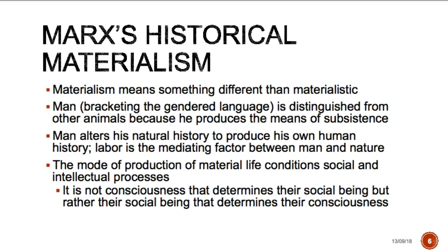Marx's historical materialism, or dialectical materialism, is one of his key ideas. Materialism here means something different than materialistic. Man is distinguished from other animals because he or she produces the means of subsistence, altering natural history to produce human history. Labor is the mediating factor between man and nature. The mode of production of material life conditions social and intellectual processes. Thus for Marx, it is not consciousness that determines social being, but rather social being that determines consciousness — a very interesting and key idea that captures the attention of many sociologists and students.